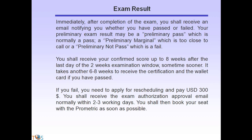Immediately after completion of the exam, you shall receive an email notifying you whether you passed or failed — a preliminary pass (normally a pass), a preliminary marginal (too close to call), or a preliminary not pass (a fail). You shall receive your confirmed score up to eight weeks after the last day of the two-week examination window, sometimes sooner. It takes around another six to eight weeks to receive the certification and wallet card if you have passed. If you fail, apply for rescheduling and pay $300.